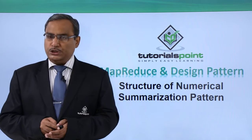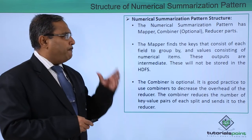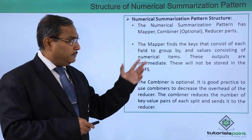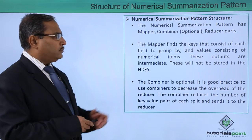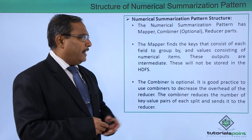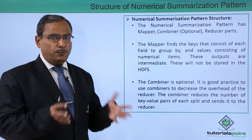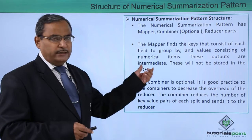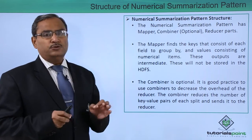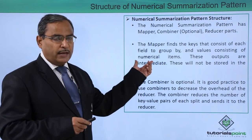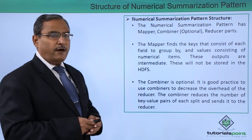The Numerical Summarization Pattern has a mapper, combiner, and reducer — the combiner being optional. The mapper finds the keys that consist of each field to group by, and the values consisting of numerical items. The mapper deals with key-value pairs, where values must be numerical because only then can we apply statistical functions over them.